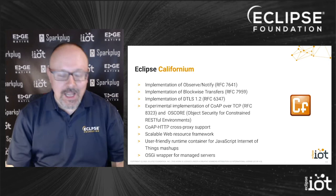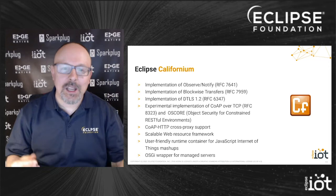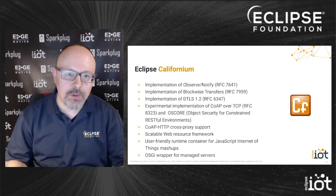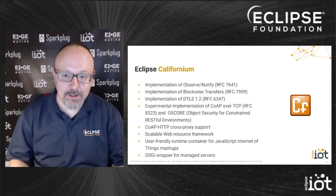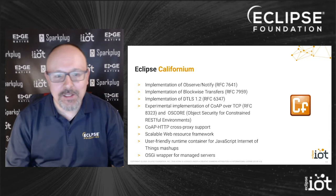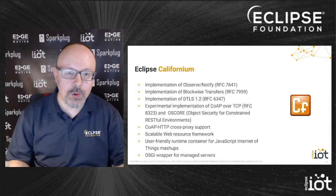Eclipse Californium has many additional features over simple CoAP implementations. It implements observe and notify, enabling a kind of publish-and-subscribe model on top of CoAP. It supports blockwise transfers, implements the latest version of DTLS, and has experimental support for CoAP over TCP. It also supports OSCORE — a security model for RESTful environments — and enables bridging CoAP and HTTP connections through cross-proxies. It comes with a scalable web resource framework and is both a client and server implementation.